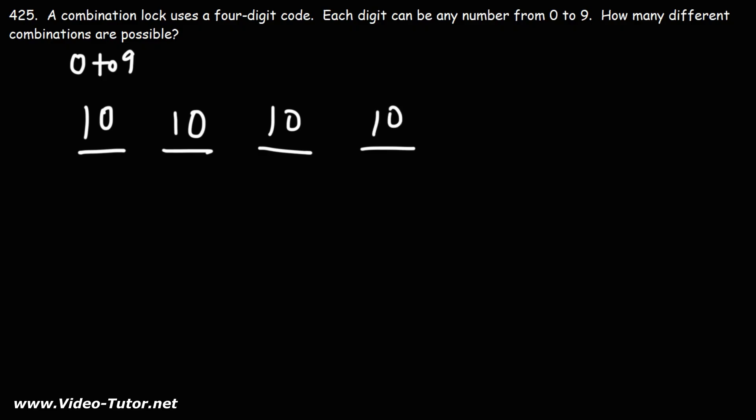So because we have to choose only one digit for each spot, to get the total number of combinations that are possible, we could use the fundamental counting principle where we just count the options for each spot and multiply those numbers together, like we did in the previous two problems.